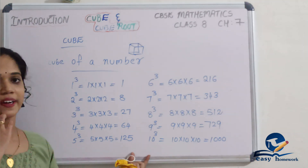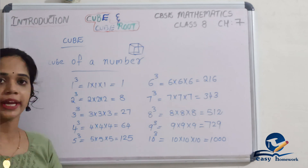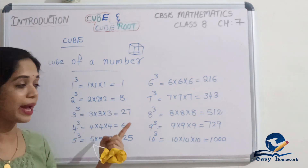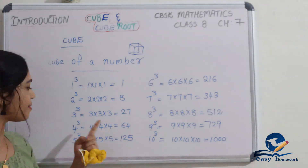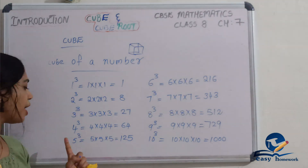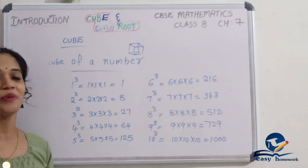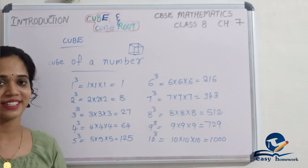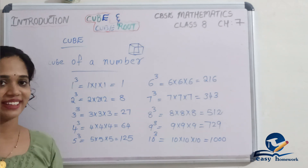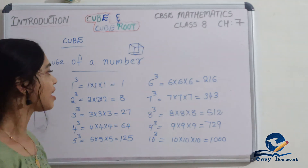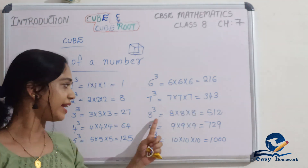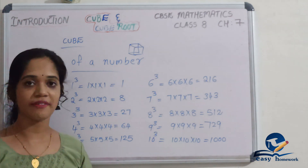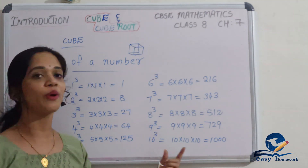This is our by-heart area. Number 1 class by-heart: 1³=1, 2³=8, 3³=27, 4³=64, 5³=125, 6³=216, 7³=343, 8³=512, 9³=729, 10³=1000.